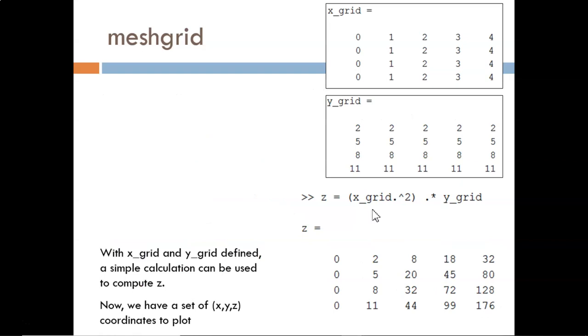Here, we see Z computed as X squared times Y. Looking at the top left corner, 0 squared times 2 produces 0. Looking at the top right index, 4 squared times 2 produces 32. And so on for all 20 of these indices. Now, we have a whole set of XYZ ordered triplets.